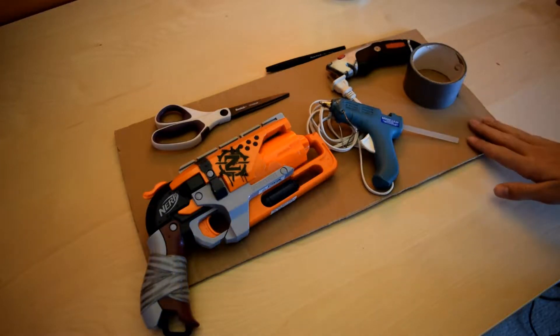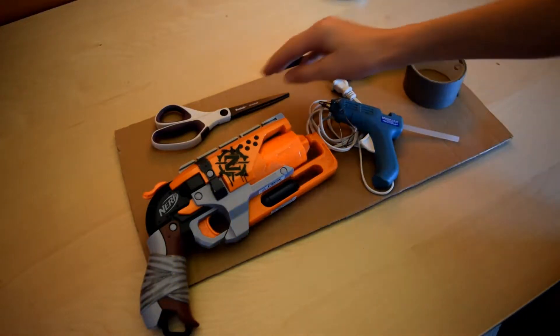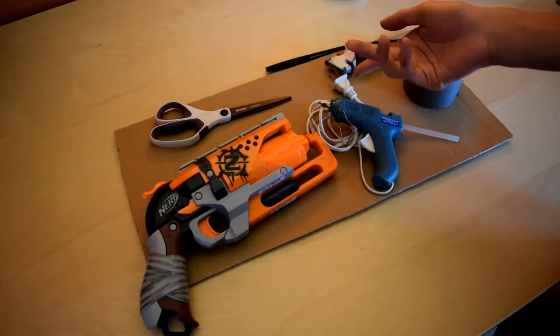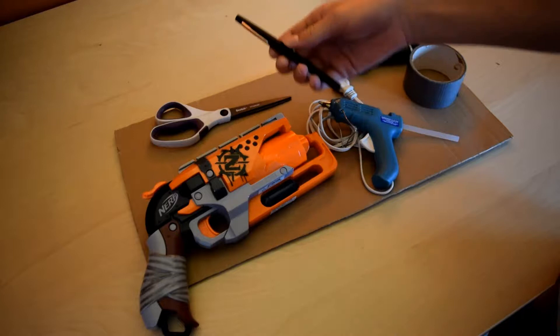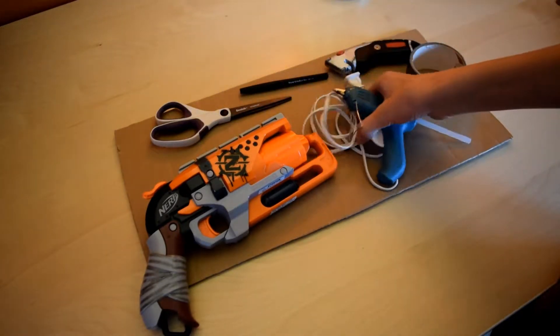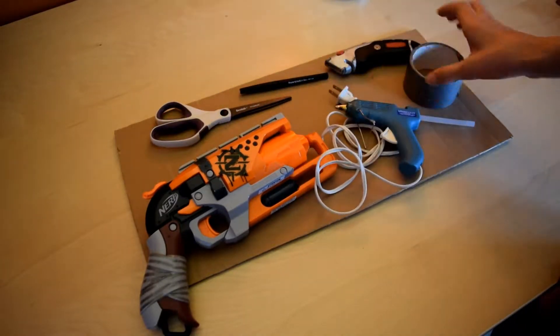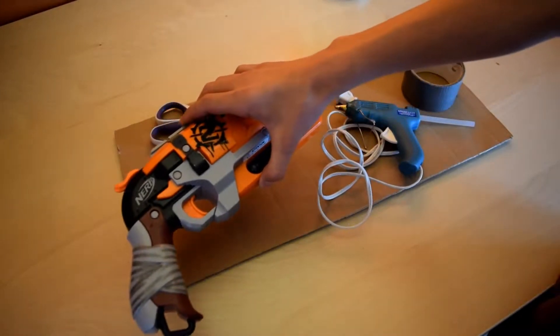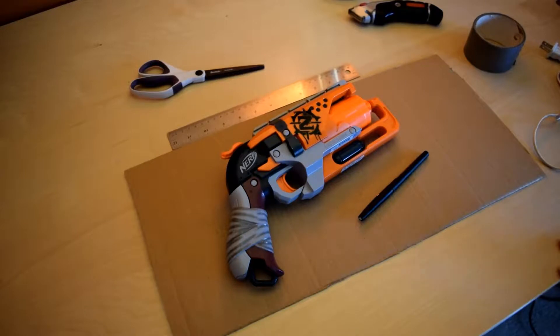You will need thin cardboard, a scissor or a utility knife (I like to use both but you can use either one), a marker or pen, a hot glue gun, duct tape, and the blaster you're making a holster for.